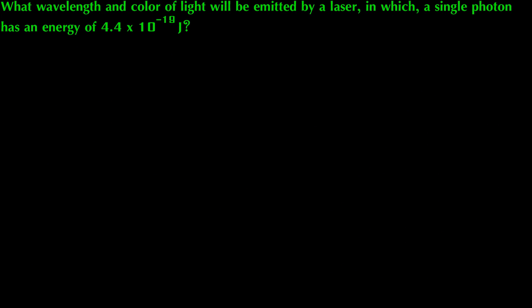Now for a slightly more complex practice problem, consider the following. What wavelength and color of light will be emitted by a laser in which a single photon has an energy of 4.4 times 10 to the minus 19 joules. First, we write Planck's energy equation where E is equal to h nu. Then we solve for nu by dividing the energy by Planck's constant. This will yield a value of 6.64 times 10 to the 14 reciprocal seconds.